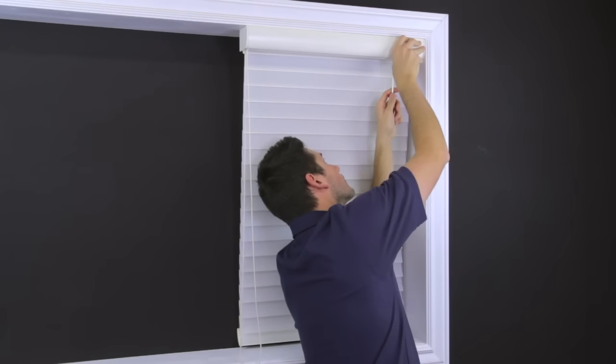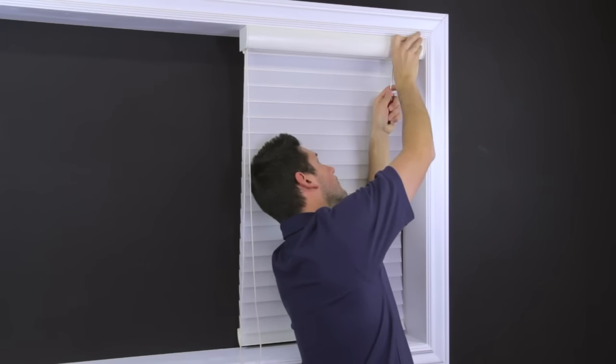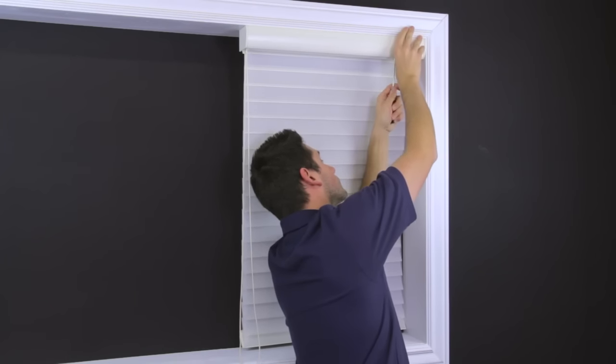Place a flathead screwdriver in the slot, push up, and twist. This should disengage the bracket, but will allow the shade to stay in place while the other brackets are disengaged. When all the brackets have been disengaged, roll the shade back up and pull the shade out towards you.